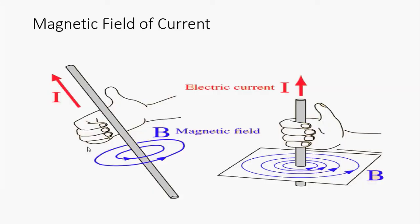The magnetic field lines of a long wire which carries an electric current form concentric circles around the wire.